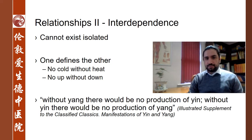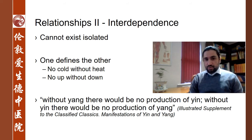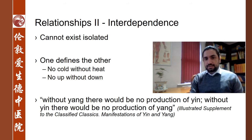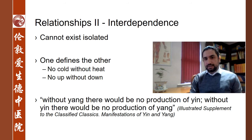The second relationship between yin and yang is that of interdependence. There is no yin without yang and there is no yang without yin. There's no cold without heat, no light without darkness, no up without down, no left without right. When we understand the concepts, we contrast and compare them to another. So within the theory of yin and yang, these two only exist in relationship with one another — they do not exist independently.